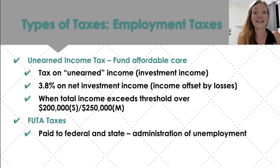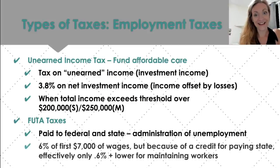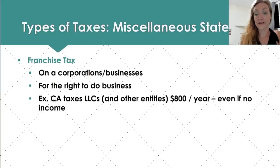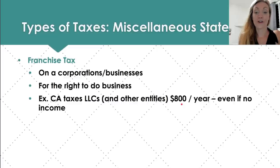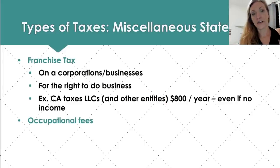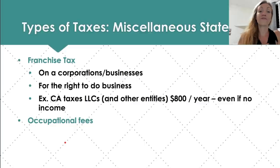FUTA — Federal Unemployment Tax — is very low but works in tandem with the state tax for unemployment insurance. Lastly, we have miscellaneous state and local taxes. Franchise taxes are on corporations or businesses for the right to do business — for example, in California, LLCs have an $800 per year tax regardless of how much money they make, even if they have no income, and this amount increases at higher income thresholds. Occupational fees — like for the CPA, Certified Public Accounting — are effectively meant to offset the state running and overseeing those regulated occupations.